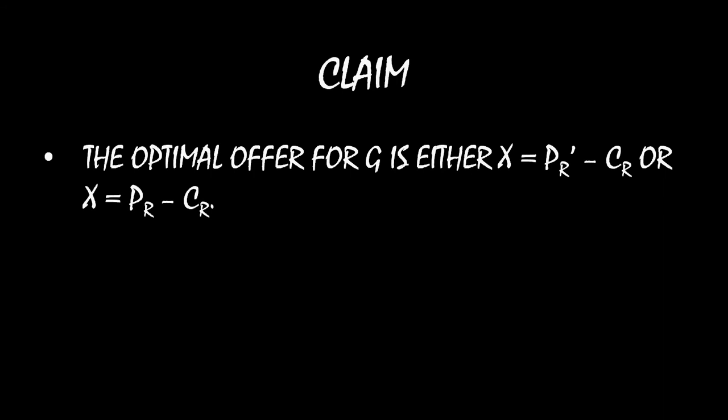The government's decision could seem very complicated because it can offer anything between 0 and 1 — that is an infinite space of numbers. There are infinitely many numbers between 0 and 1. So there are a huge number of offers the government needs to consider. But I'm going to make a claim — and this is actually a true claim — that the optimal offer for the government isn't a huge continuum. It's going to be just two. The optimal offer is either X equal to PR prime minus CR or X equal to PR minus CR.